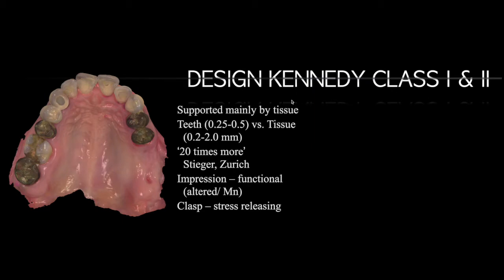When designing Kennedy class 1 and 2—either bilateral distal missing or this particular case showing unilateral distal extension, missing numbers 14 and 15, while 2 and 3 are present—this is called unilateral distal extension, class 2. In this condition, the prosthesis is mainly supported by the tissue underneath it because there is no posterior tooth to support the bite force. When the prosthesis is tissue-supported, the movement under bite is much greater than in Kennedy class 3.